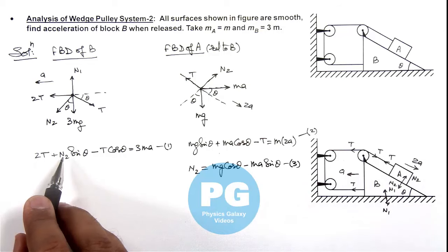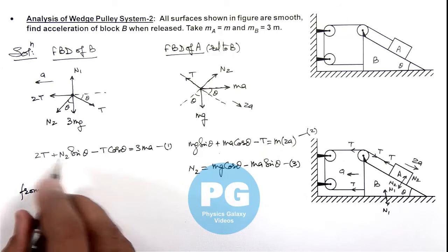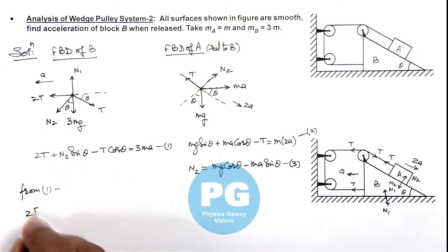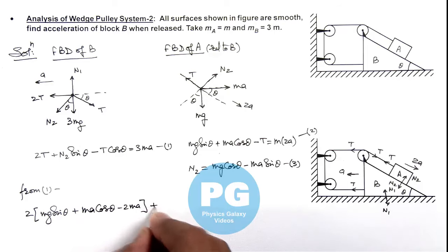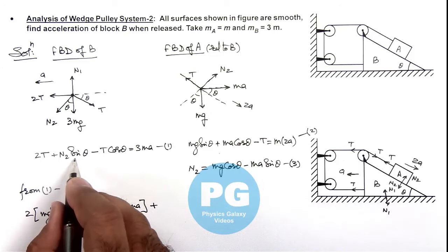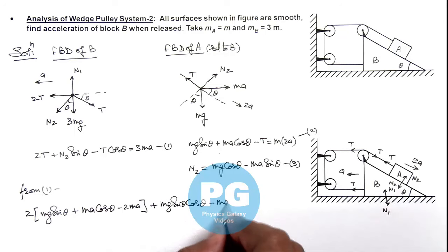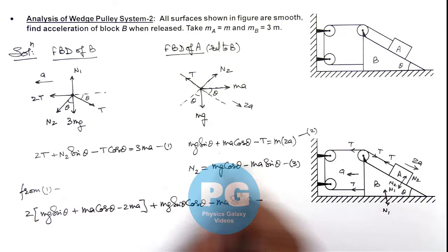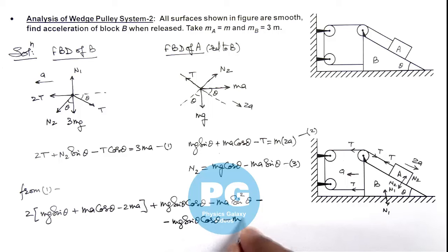Substituting the values of N2 and T from Equations 2 and 3 directly into Equation 1: the 2T term is substituted as 2(m·g·sinθ + m·ay·cosθ − 2m·ay), plus N2·sinθ gives m·g·sinθ·cosθ − m·ay·sin²θ, and minus T·cosθ gives −m·g·sinθ·cosθ − m·ay·cos²θ.